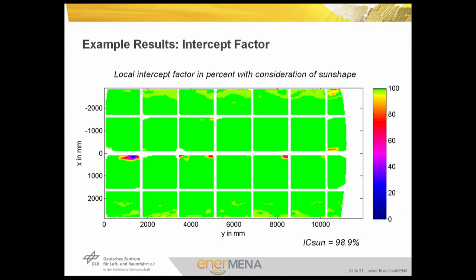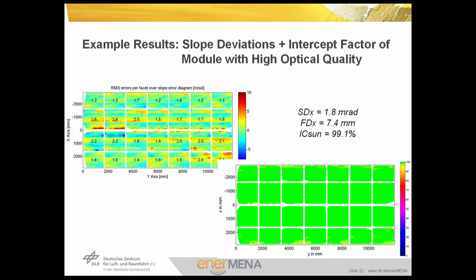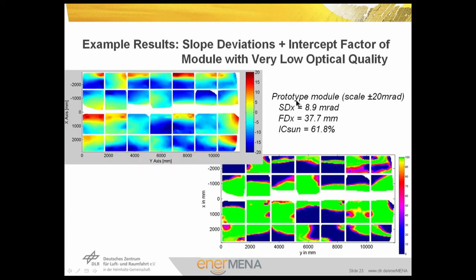From an intercept map, we can estimate the intercept of the entire module. For a good module with a normal Eurotrough geometry — aperture width of approximately 6 meters and absorber tube radius of 35 millimeters — good values are an SDX below 2 milli-radian and an FDX below 10 milli-radian, achieving an intercept factor above 99%. For a bad module, the slope deviation in curvature direction is much higher, in the range of 9 milli-radian, and the intercept factor is reduced to approximately 60%.